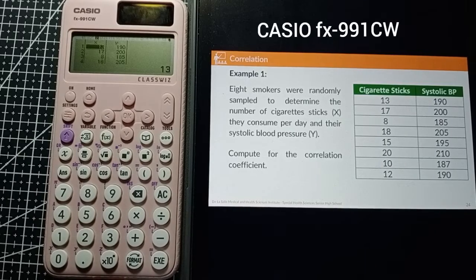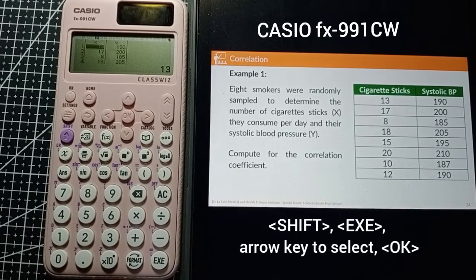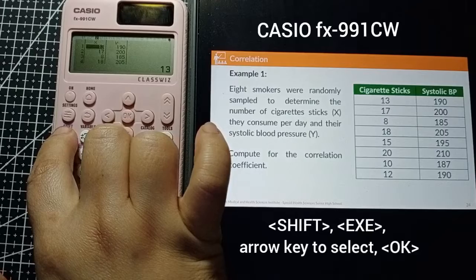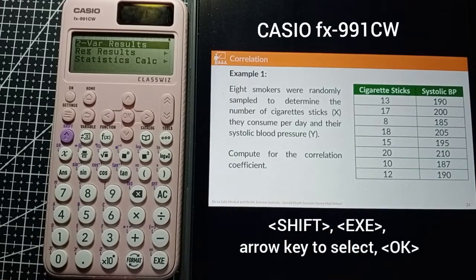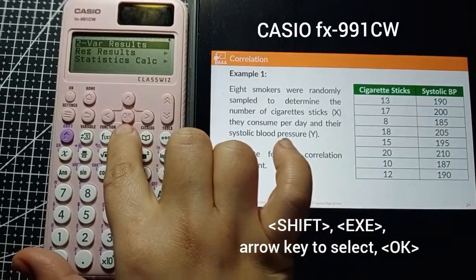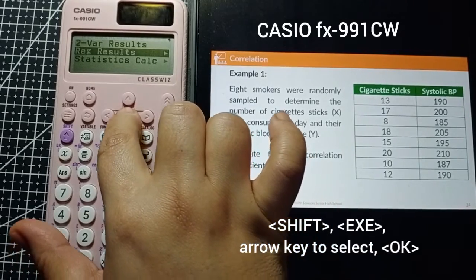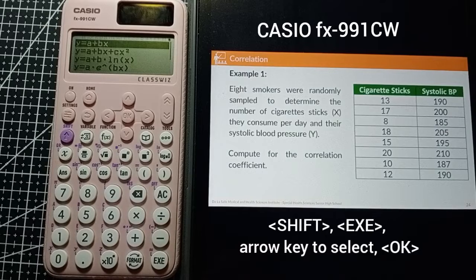Once you've checked that all the data are correct, click Shift, then EXE. Select Reg Result for regression. You'll see the equation of the line: y equals a plus bx, with the calculated values.